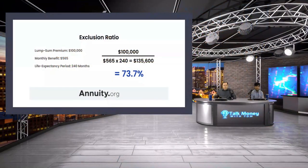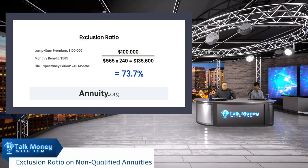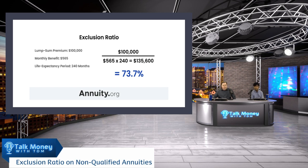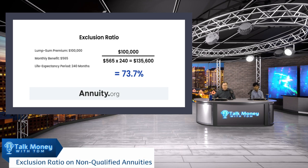Our first question: can you explain the exclusion ratio for a non-qualified annuity? So we got this question early so we got a little chart for you. The exclusion ratio — in this particular case we're going to make an assumption you got $100,000. You're going to put it in a lump sum and buy what's called a SPIA, a single premium immediate annuity. $100,000, and you can see the monthly benefit is $565.